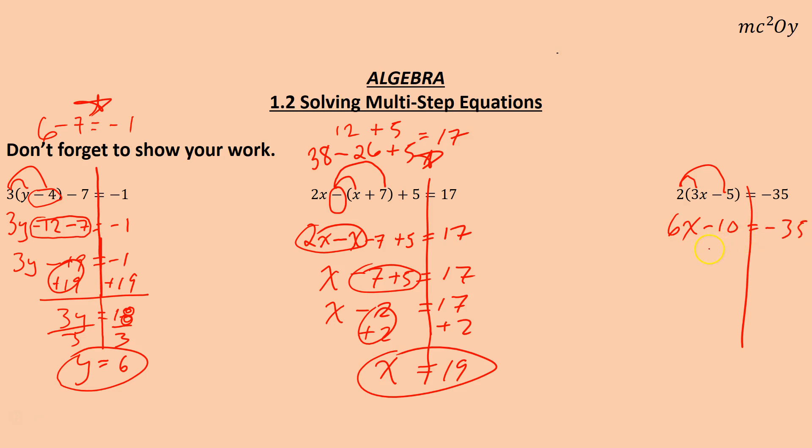Again, we can't put anything else together, so we'll add 10. Start moving things over to the other side. We get 6x is negative 25. And we'll divide by 6, divide by 6. End up with 1x is equal to negative 25 over 6. Now that's a bit ugly.